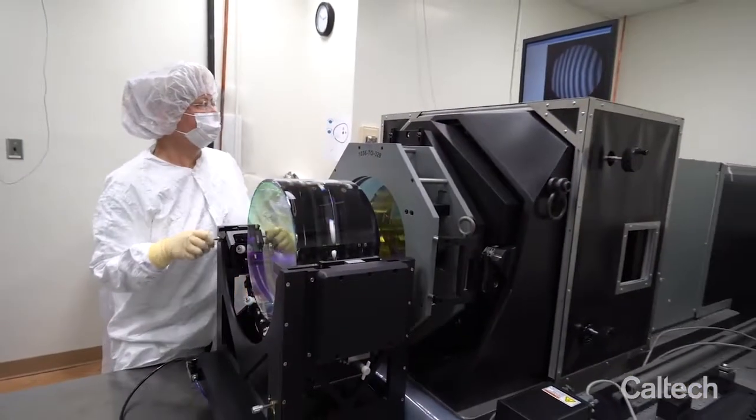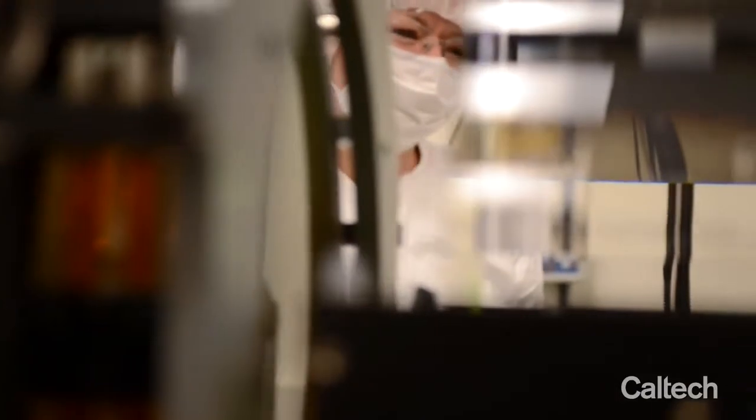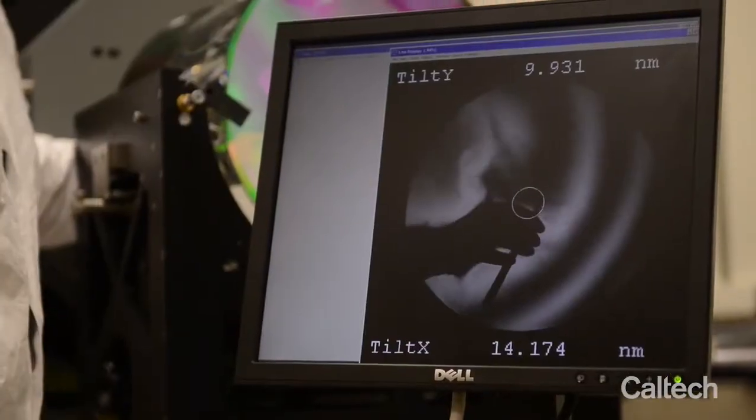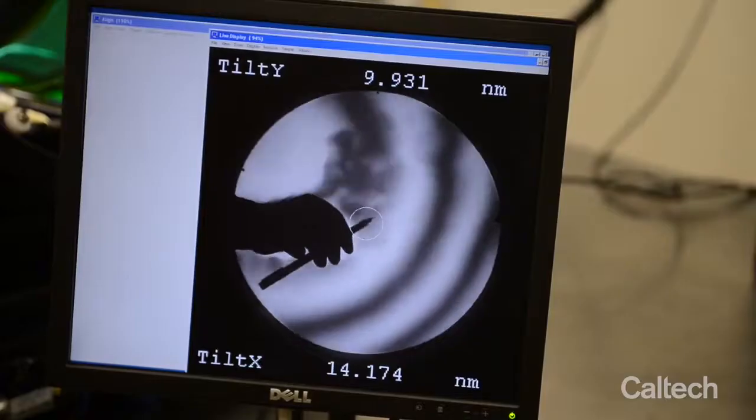We measure the surface profile of the test masses in many different orientations using a Fizeau interferometer. We need to align each map with the next by using fiducials that we place on the surface using a very special ink pen.